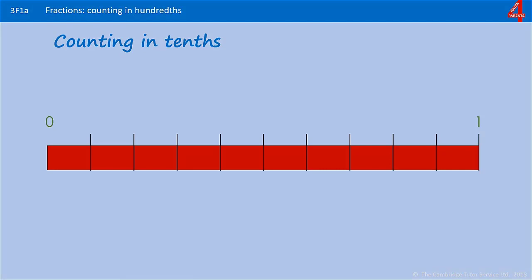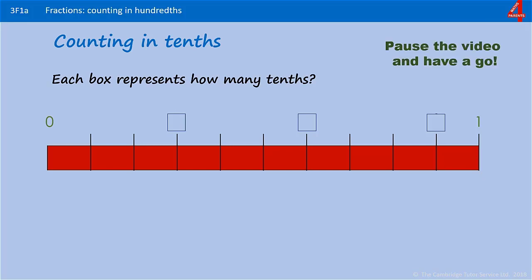Here we have a number line. It goes from zero to one and it's been divided into ten sections. Each section is one tenth of the whole line. Each time we move along one tenth, we're adding on a tenth until we get to ten tenths, which is a whole one. Just so you can make sure you're familiar with this, here's one that you can have a go at. Each box represents how many tenths. Pause the video, have a go.